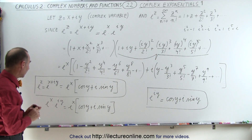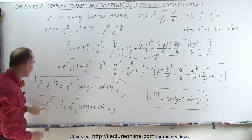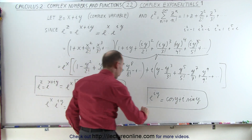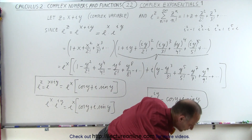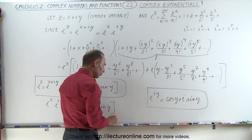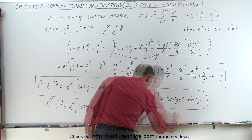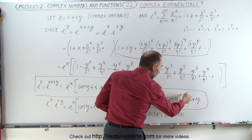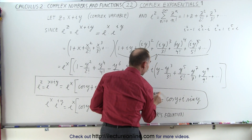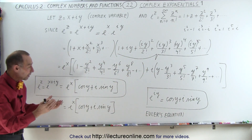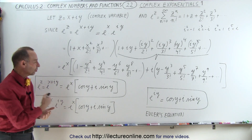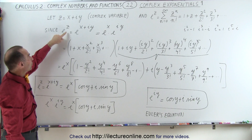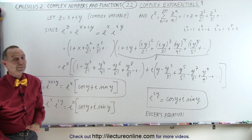In conclusion, e to the z can be written as e to the x times e to the iy, and e to the iy expands as cosine of y plus i times sine of y. That is known as Euler's equation. It's a very interesting connection between the cosine and sine functions using the complex number i and the exponential with a complex exponent. This is a very important relationship that helps us solve fairly difficult problems — that's how it's done.